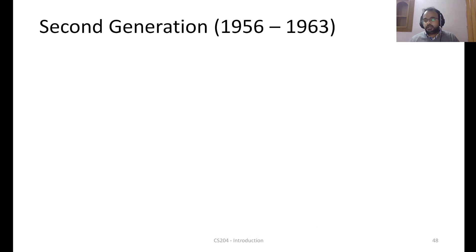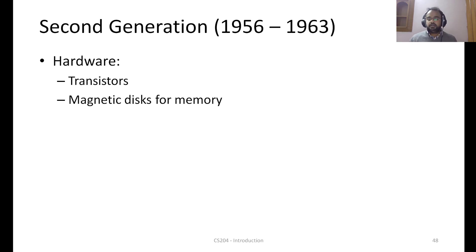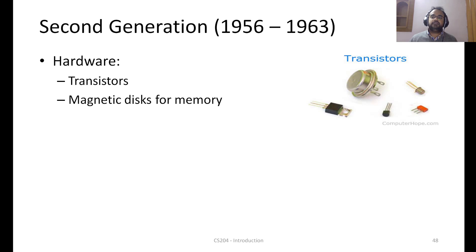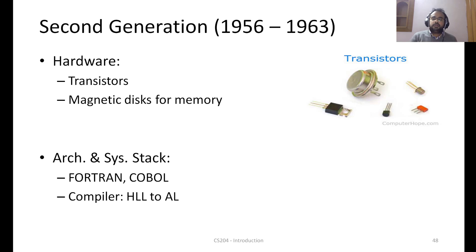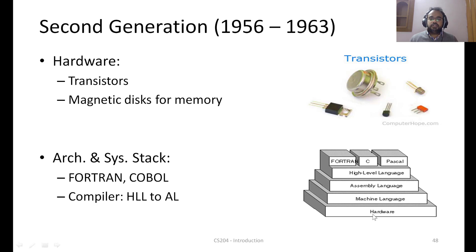In the second generation, there were advancements on both the technological and conceptual fronts. The invention of transistors and usage of magnetic disks for memory were key hardware developments. On the software stack, languages Fortran and COBOL were built, and the notion of compilation — converting a high-level language to assembly language — was developed.